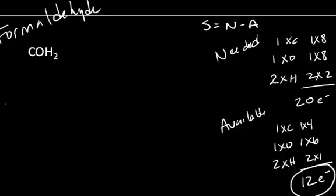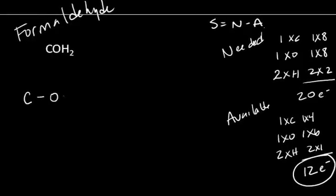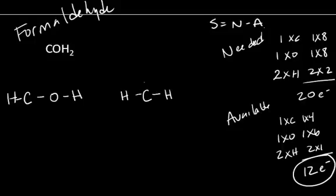The next thing you do is write out the skeletal structure connecting each atom. In one case, we have carbon bound to oxygen, with hydrogen on either end — hydrogen is always terminal. Another way to put the structure together would be carbon in the center with two hydrogens bound directly to the carbon and oxygen bound to the carbon as well. In both cases, we've used six of our available 12 electrons.